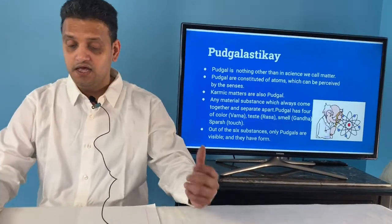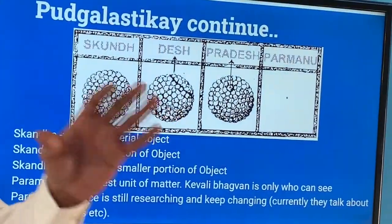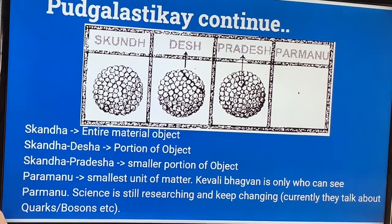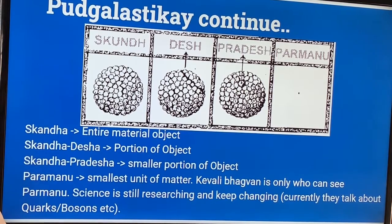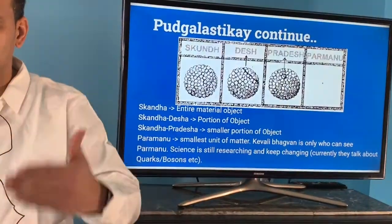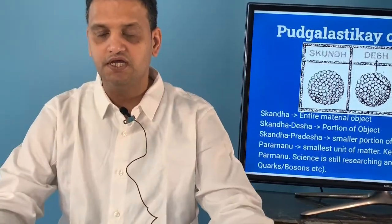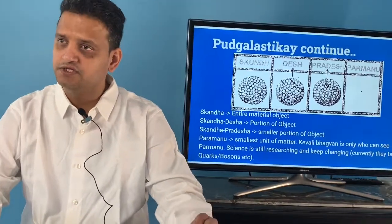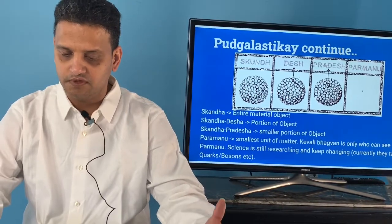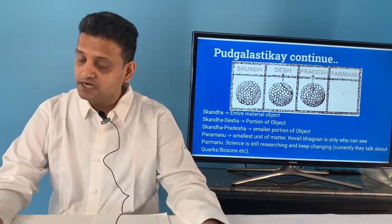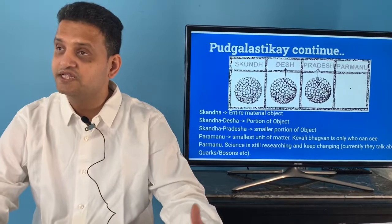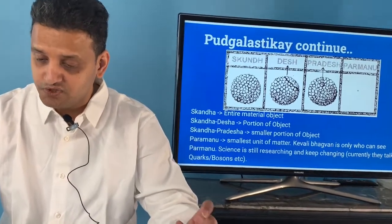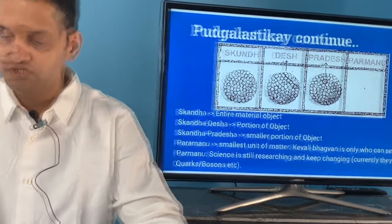In the Ajiv world, an entire material object like a chair is called a skand. A portion of an object — like one leg of the chair — is called a desh. A smaller portion is called skandh pradesh, and finally the smallest particle is called parmanu. Only Kevali Bhagwan can see the parmanu, while science is still searching for the smallest unit of matter, like quarks or bosons.